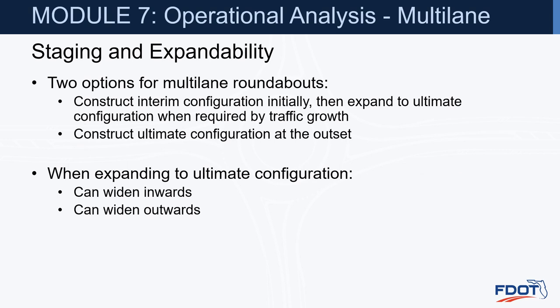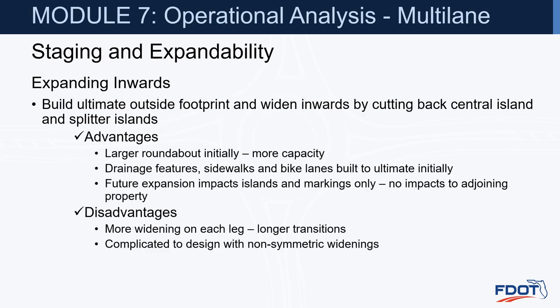Options for multi-lane roundabouts: construct the interim configuration initially and expand when required by traffic growth, or construct the ultimate configuration at the outset. When expanding to the ultimate configuration, you can widen inwards or outwards. Expanding inwards means building the ultimate outside footprint and widening inward by cutting back the central island and splitter islands. Advantages: larger roundabout initially provides more capacity, drainage, sidewalk, and bike lanes are built in their ultimate location, future expansion impacts islands and markings only with no impacts to adjoining properties. Disadvantage: more widening on each leg and longer transitions, more complicated to design.